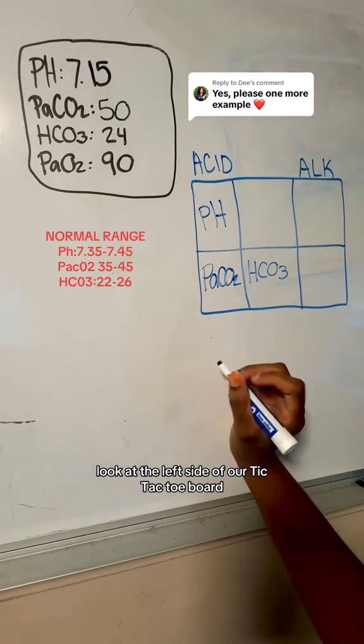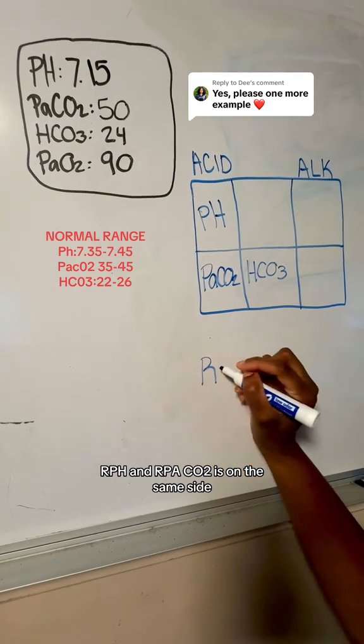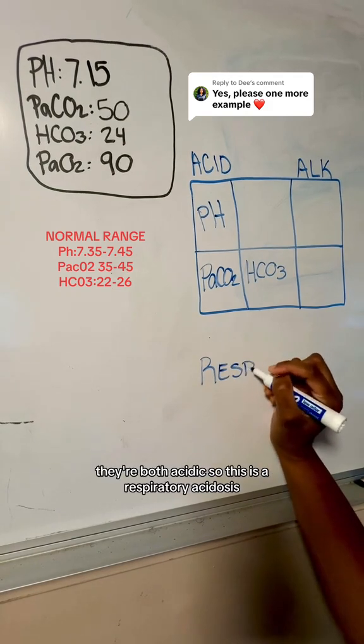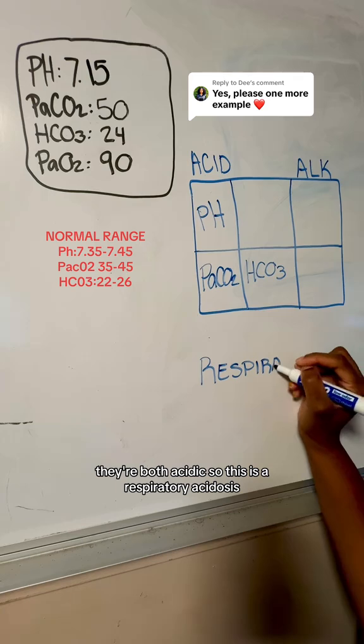Look at the left side of our tic-tac-toe board. Our pH and our PaCO2 are on the same side. They're both acidic, so this is a respiratory acidosis.